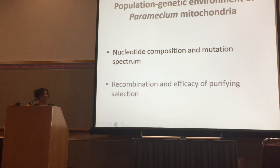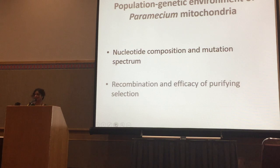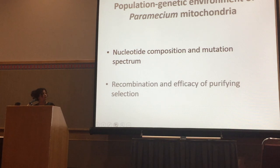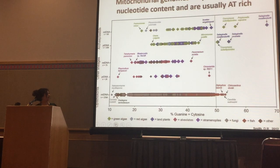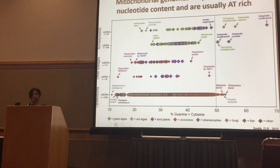For this talk, I would like to discuss two things: one is the nucleotide composition and mutation spectrum in mitochondria, and the other is recombination and efficacy of purifying selection. We know that mitochondrial genomes have immensely different nucleotide compositions. Categorized by GC content, we know that GC content can be as low as 10% and as high as 65%, but most are usually AT-rich. In Paramecium, they seem to have undergone a nucleotide content change.